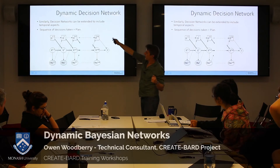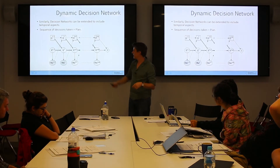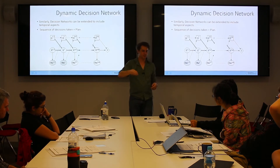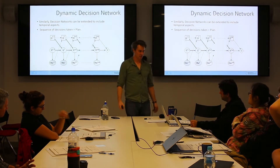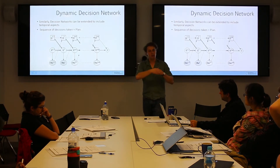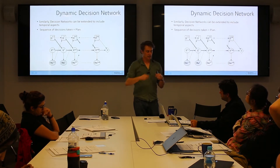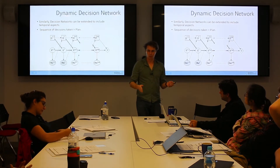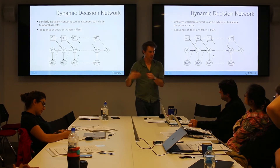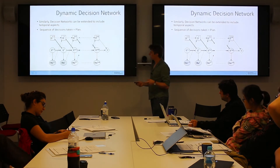We can also use dynamic Bayesian networks with decision networks to create a decision plan over time. In the fever network, for example, we could decide how often to take aspirin in case we might develop a fever. In my grassland work, I project the model into the future and test different management scenarios — like burning every autumn or grazing every spring — to see how the model projects forward and make a decision plan over time.